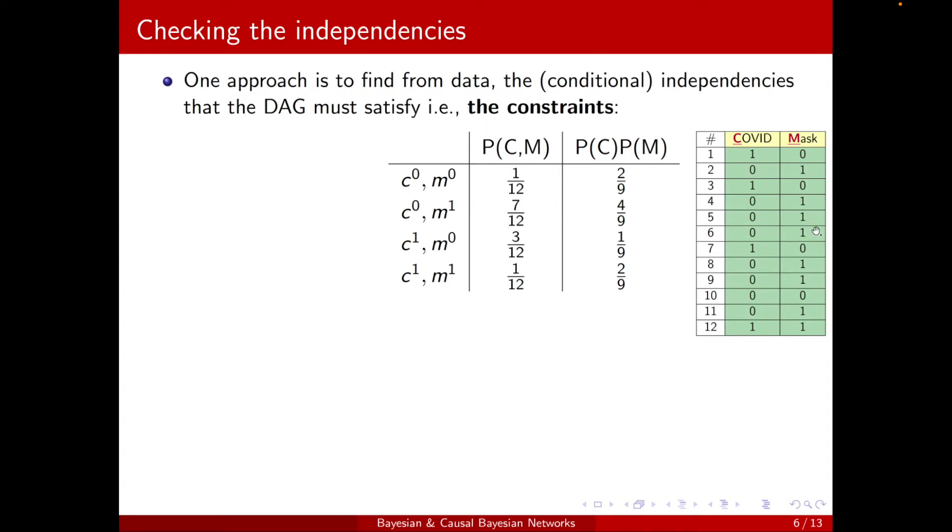These conditional independencies are the constraints, because the graph should satisfy them. So if we have the table, then we can obtain P(C,M). And also, we can obtain P(C) and P(M), so we can multiply them and see if these two match. Okay? So if they match for all the cases, then we say that they're independent.